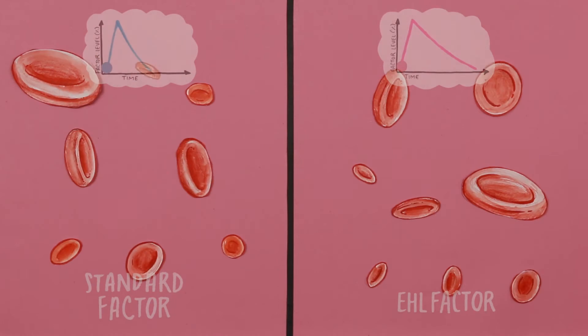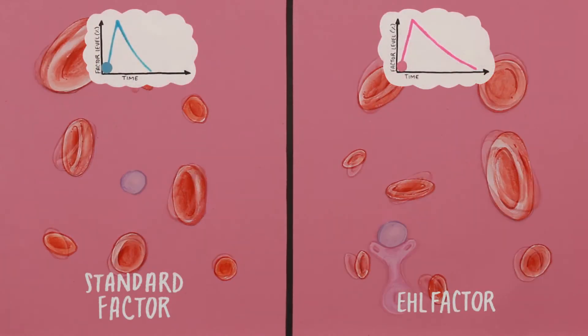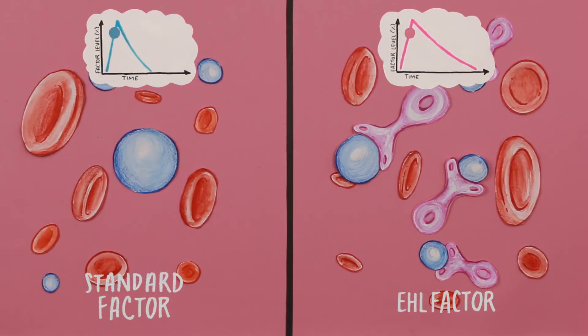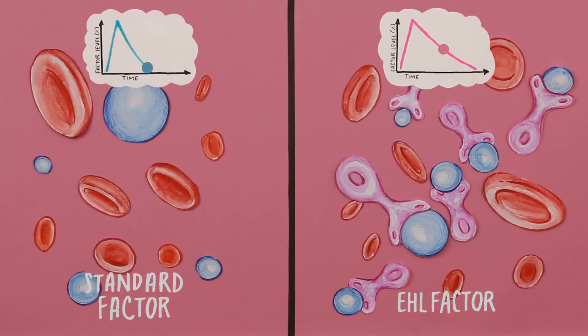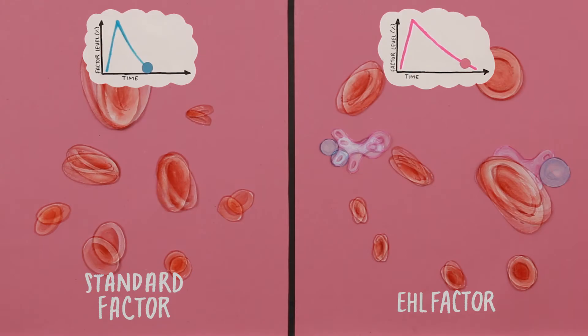There are now factor treatments that can last longer in the blood. These are called extended half-life factor concentrates. They have been specially engineered to have a longer half-life, which means EHL factors decrease at a slower rate than standard factors.